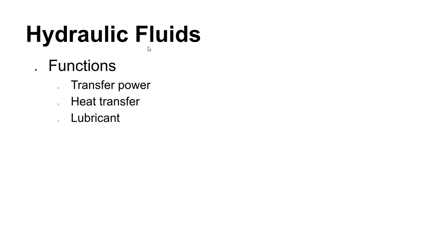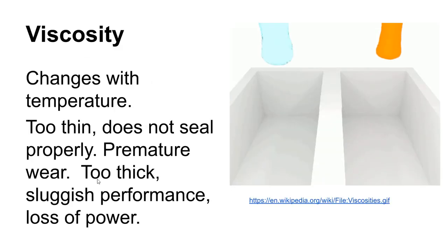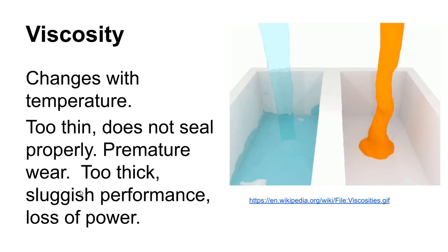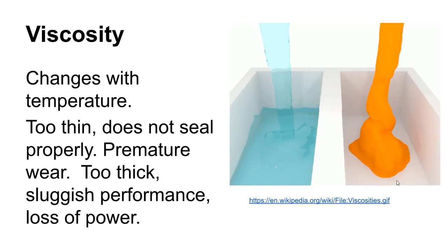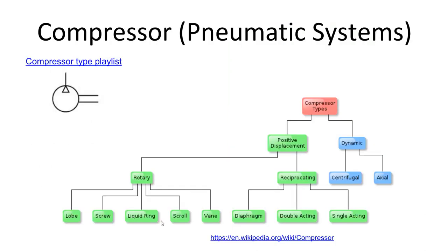Hydraulic fluid functions to transmit power, but it also does heat transfer — you can have heat exchangers that cool the system down — and it operates as a lubricant. Viscosity is important to understand: it's the internal friction of a liquid. High viscosity is like honey, flowing slowly; low viscosity flows easily.